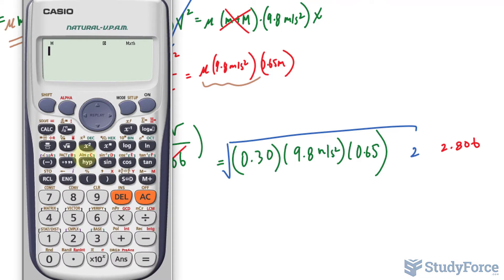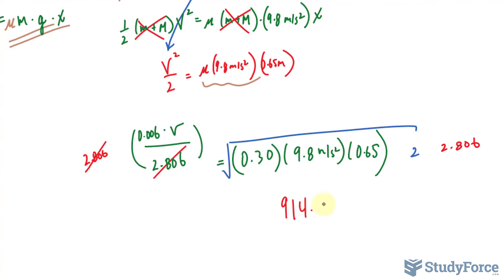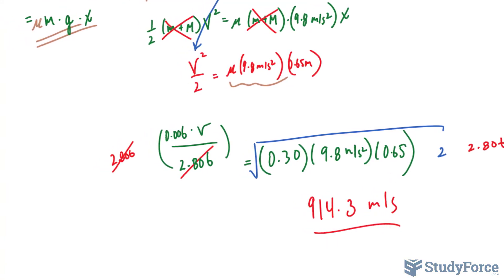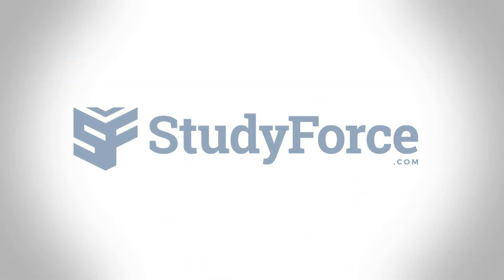So using our calculator, the square root of 0.3 times 9.8 times 0.65 times 2. Multiply that to 2.806, and then divide that by 0.006. That gives us 914.3 meters per second. That is the speed of the bullet before it has reached the block in this problem.